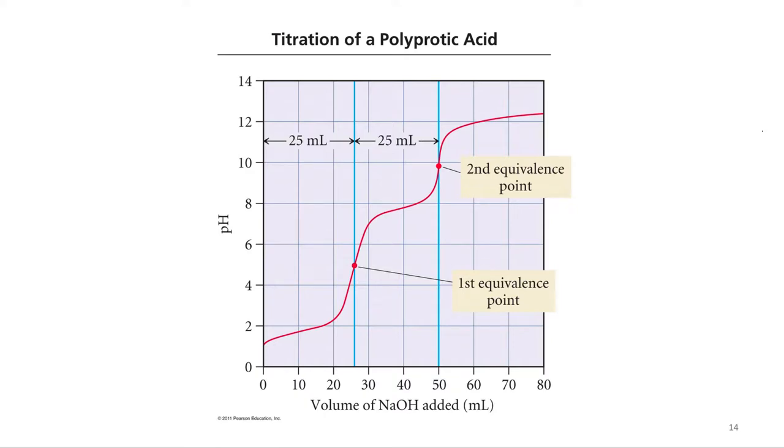Remember, each proton has a Ka, and so you can go here. Basically they look like titration curves on top of each other. So here's the titration curve for the first proton, and then here's the titration curve for the second proton.